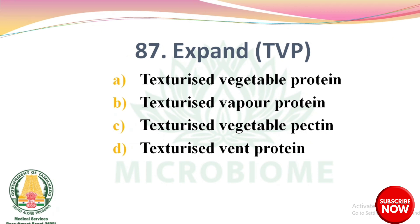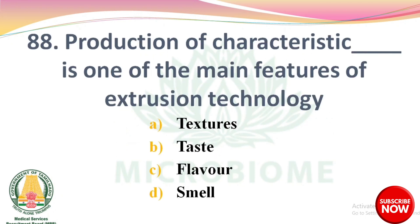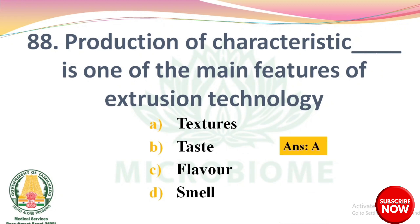Next question: production of characteristic dash is one of the main features of extrusion technology. Options: textures, taste, flavor, smell. The right answer is Option A: textures.